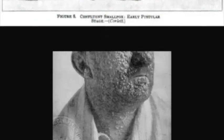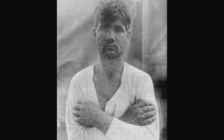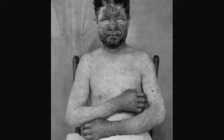Once the pustules would form, patients would be in agony and feel as though their skin was on fire. There are two forms of variola: variola major and variola minor. Variola major kills between 10 and 30 percent of its victims. Variola minor kills less than 1 percent. The two types produce similar symptoms, but it is unknown why one is more deadly than the other.